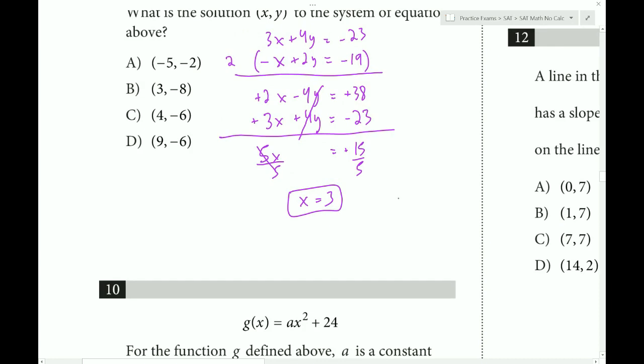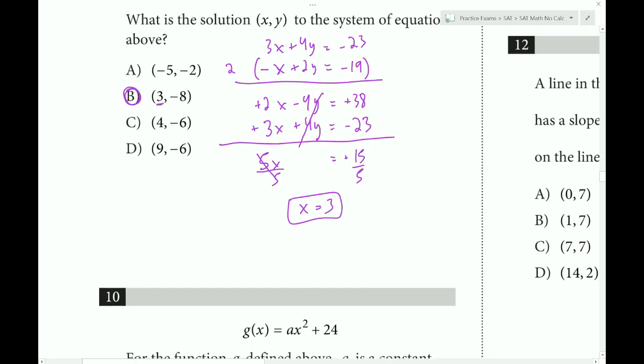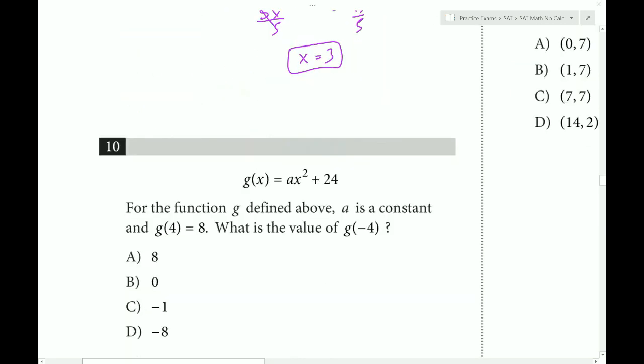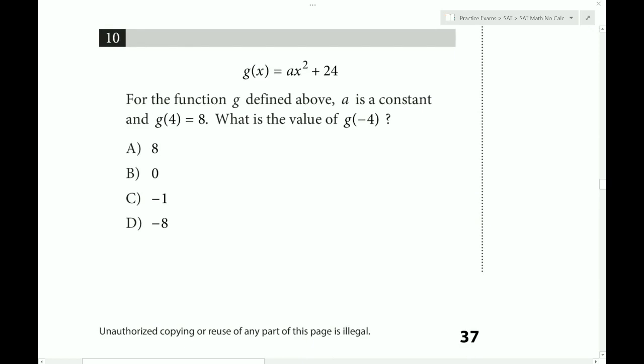Now, once we know our X value, we can come to these choices, and this is the only one that has the correct X value. So normally, I'd have to plug back in to find out why. And I can plug back in either the original equation or this equation here. But that's not necessary here because B is the only choice that has 3 as the X value.